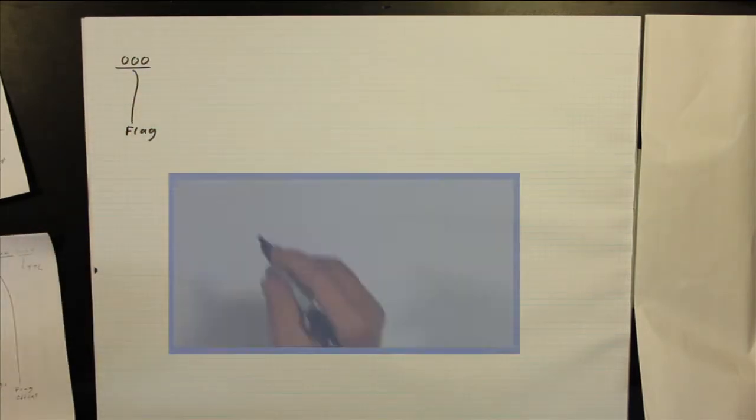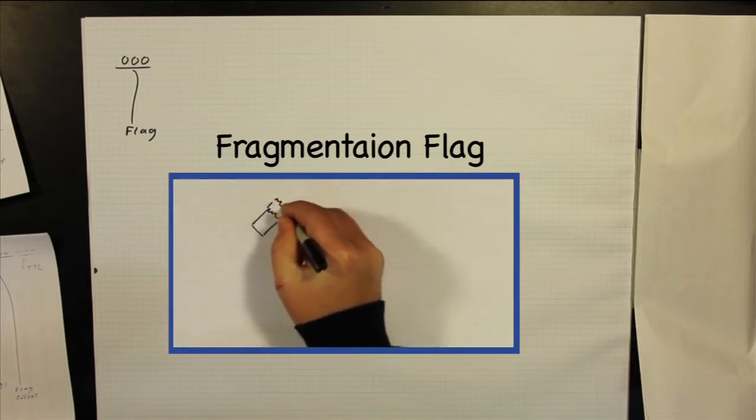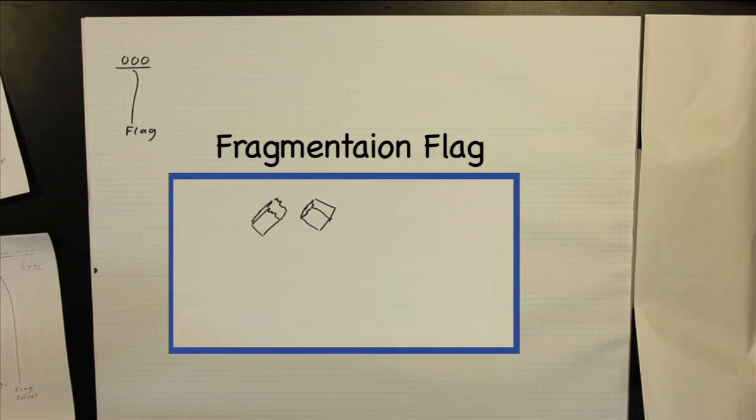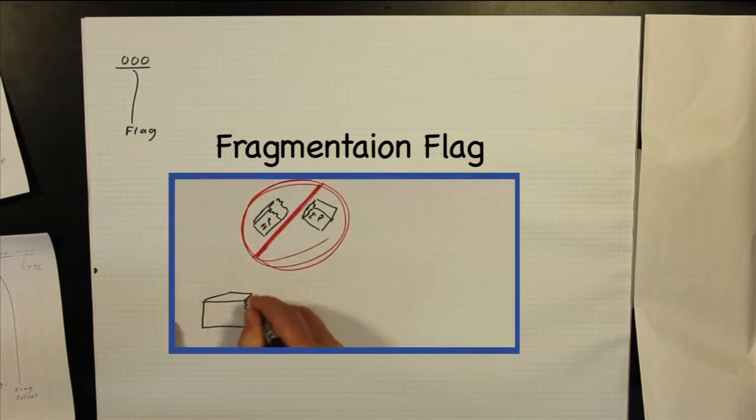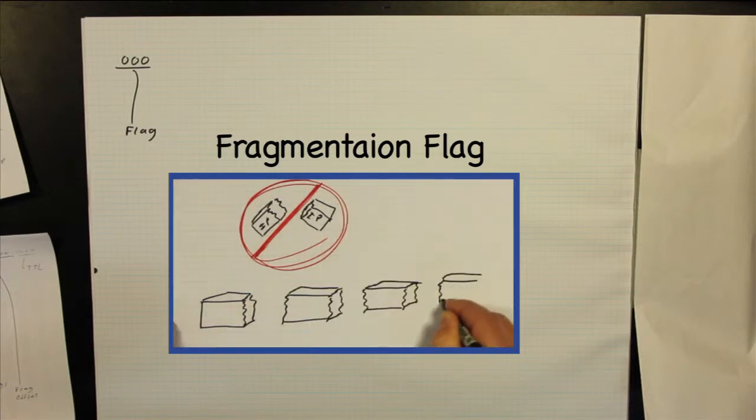These three bits are used to indicate one, don't fragment this packet, or two, there are more fragments following this one. Again, packets are sometimes broken up when they are too long to pass easily through a network.